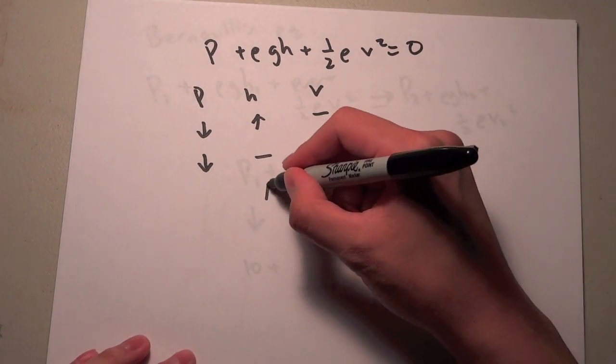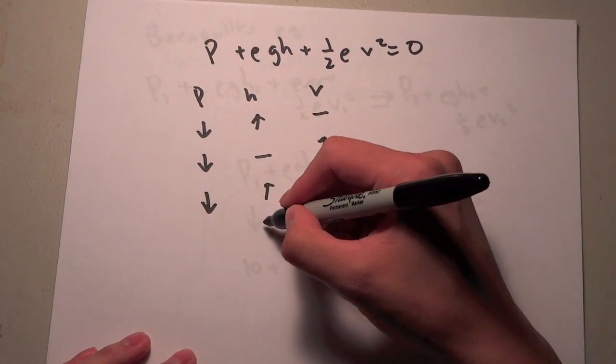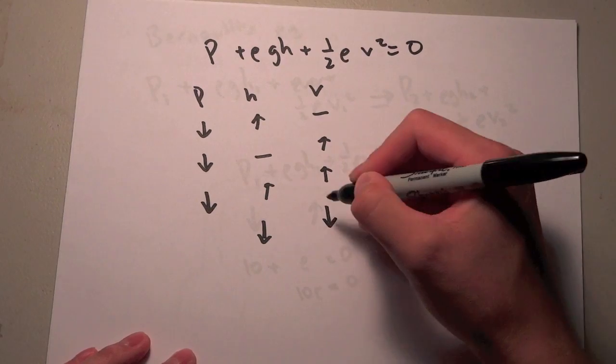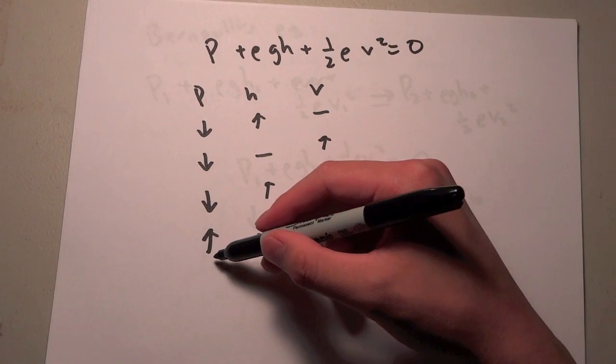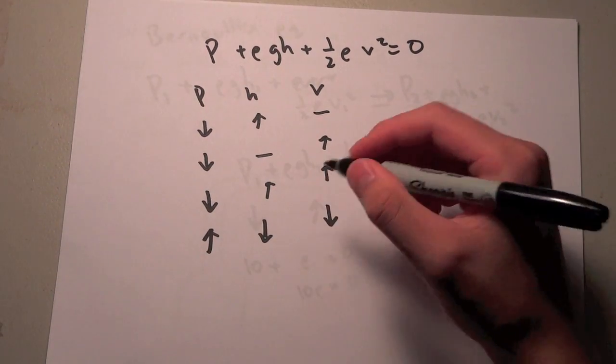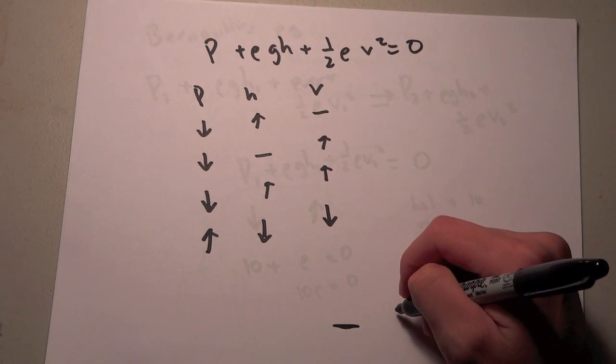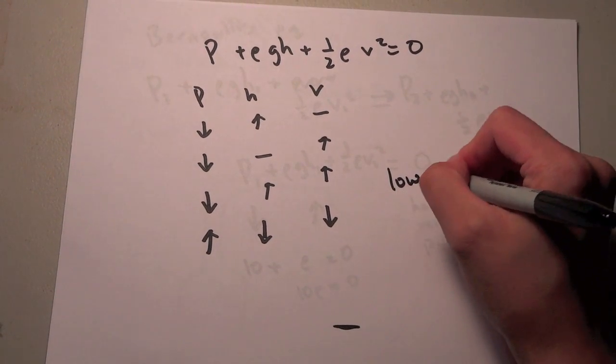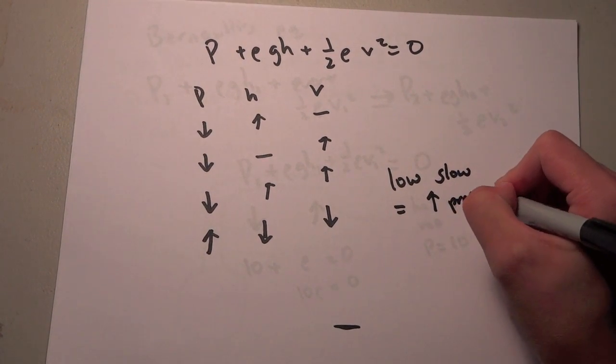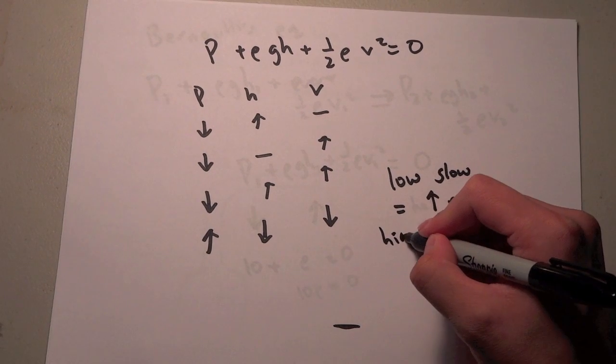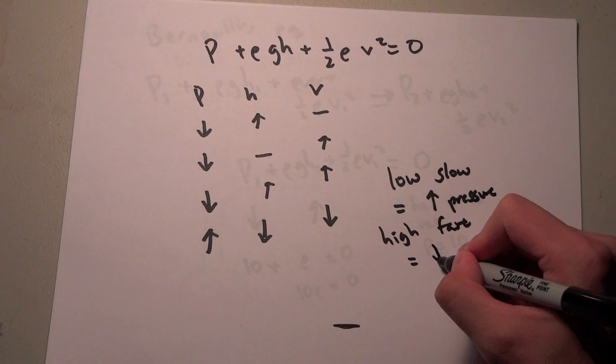Now let's see, what if we increase the height and increase the velocity? Well we're definitely going to see a decrease. And if we decrease the height, decrease the velocity, we'll see an increase in pressure. In order to get the maximum pressure, we're going to have to decrease everything. So we're going to have to be at the lowest point and we're also going to be the slowest. So low and slow equals a high pressure. High and fast equals a low pressure.